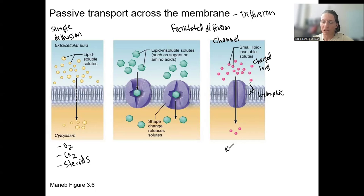This might be potassium, sodium, chloride, charged things. Still down a gradient, still passive transport, but requires that protein just to be there.